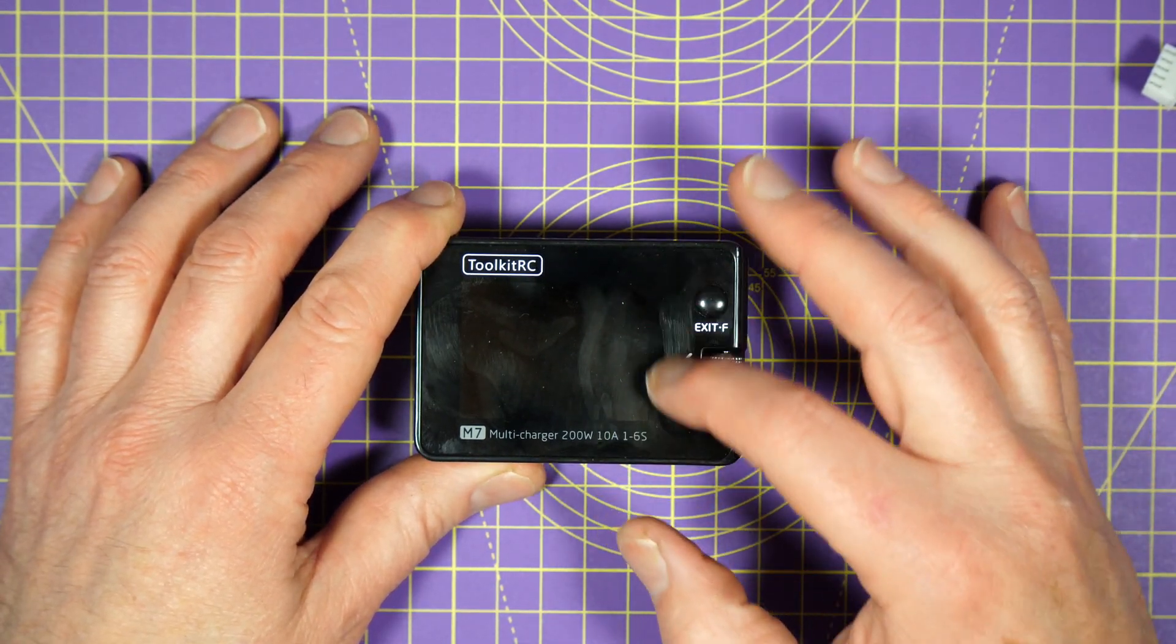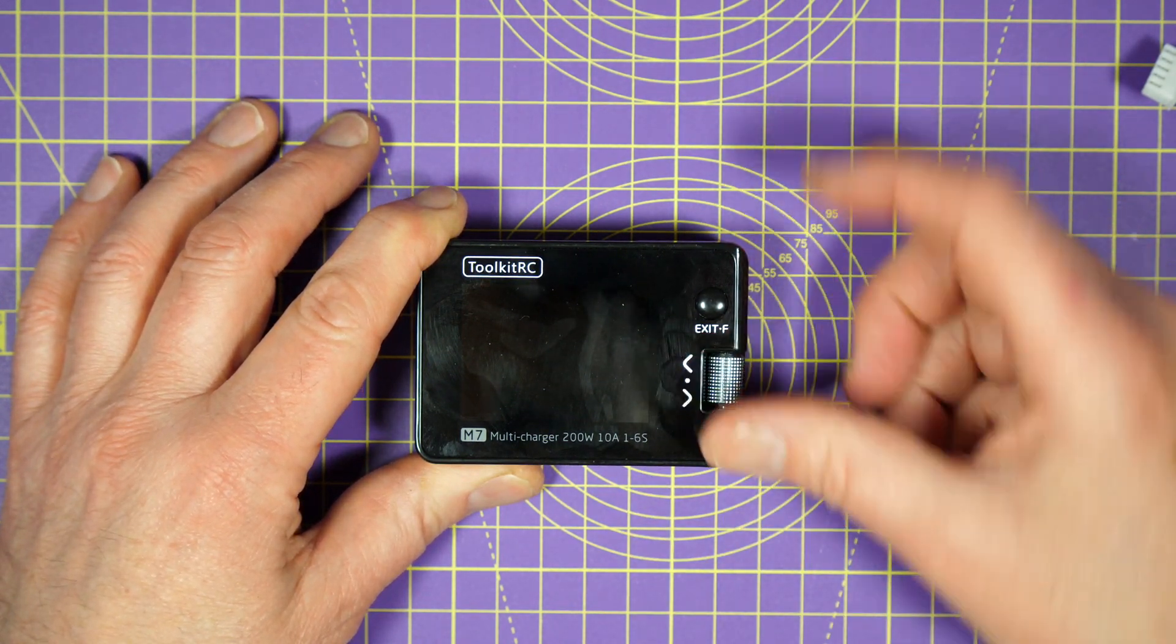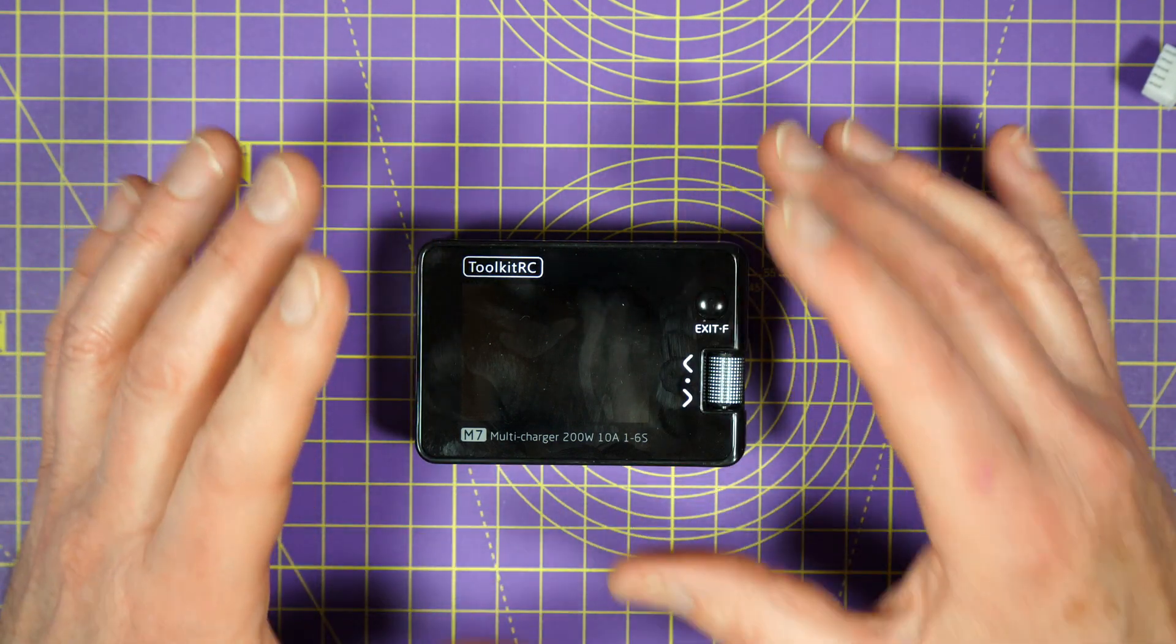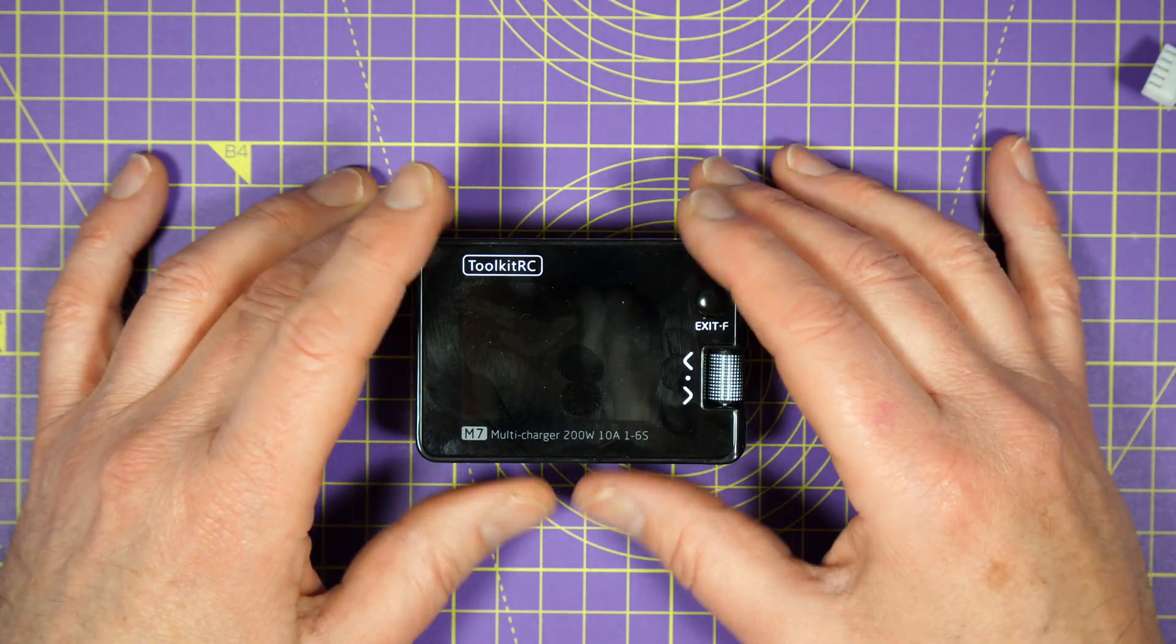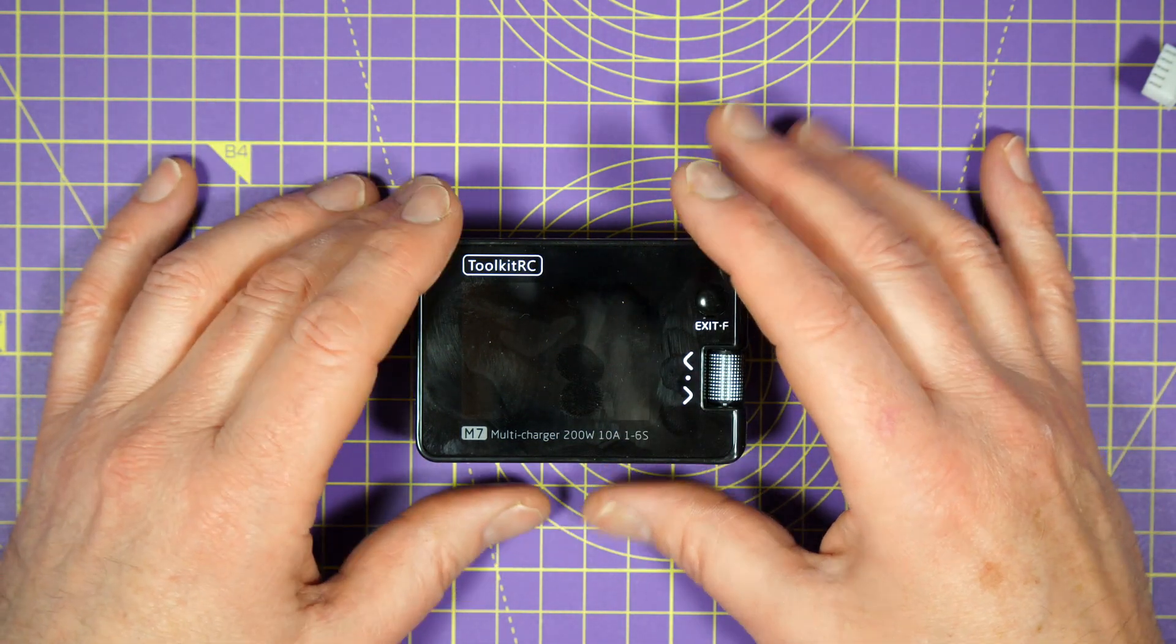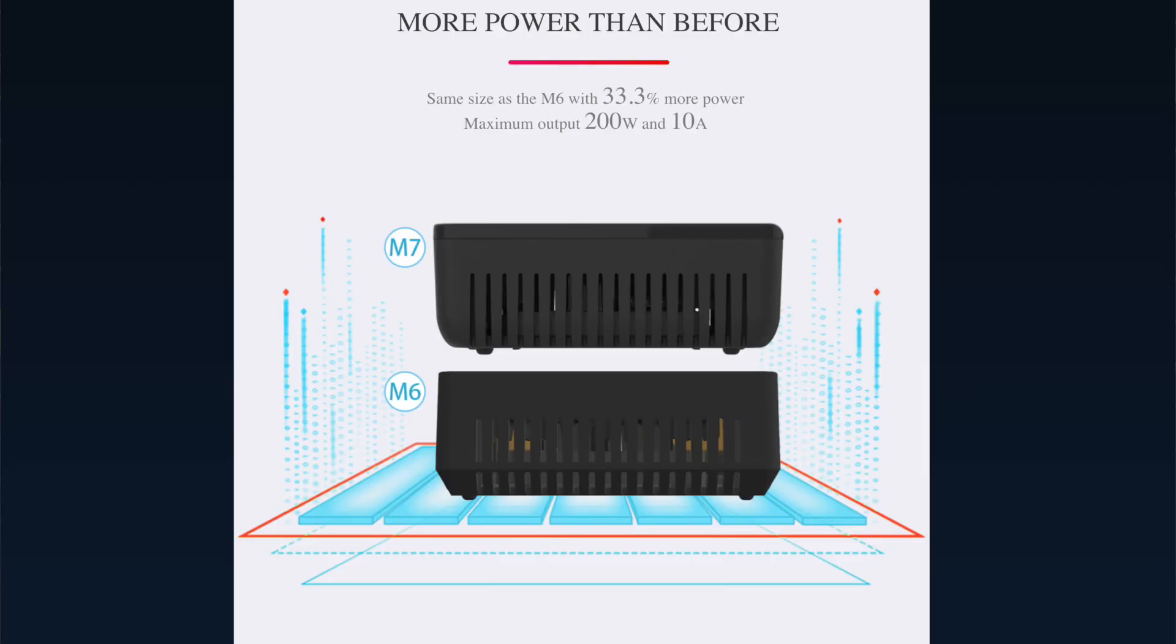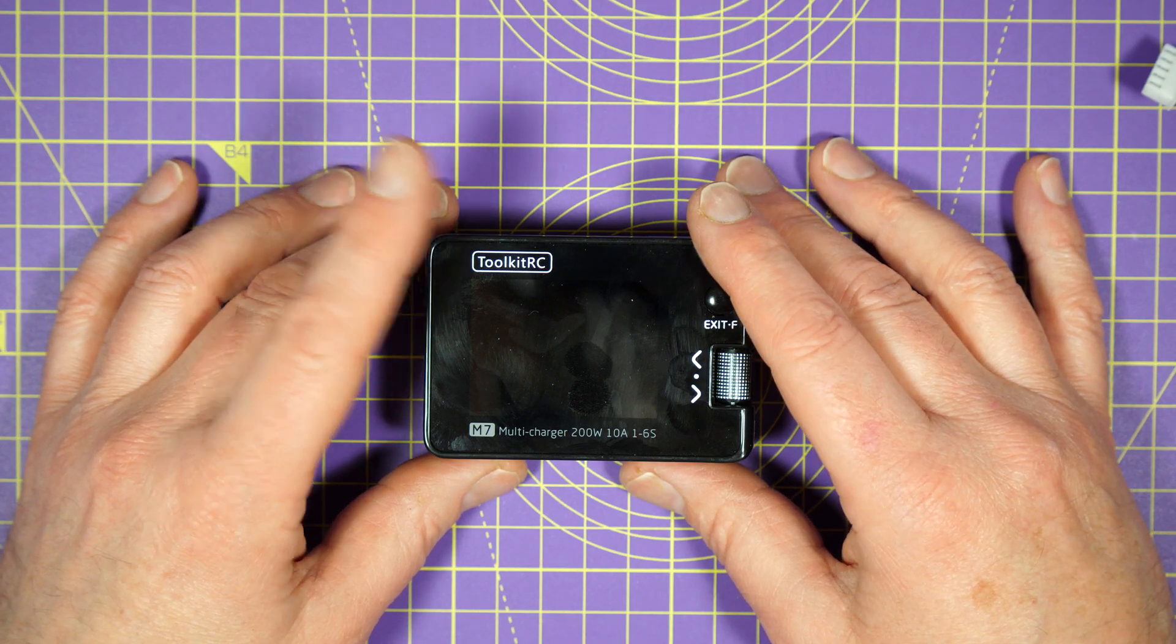Gone are the capacitive buttons and in is the clickable scroll wheel and the exit button, which is pretty common to their recent family of chargers. The user interface on here is just like the M6D, M4D, and others. It's the same size as the M6, and despite being only 10 grams heavier, it's got 33% more power at 200 watts. The Toolkit RC magicians have done their thing yet again.